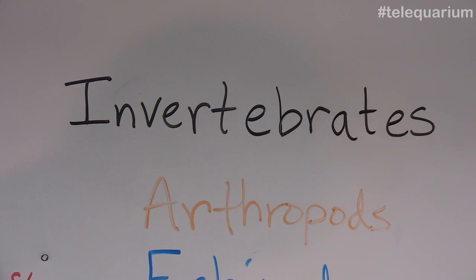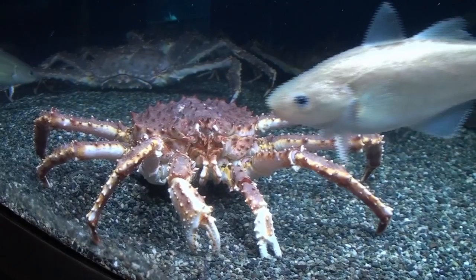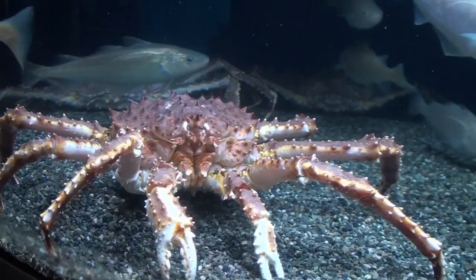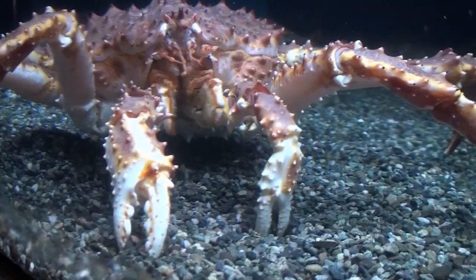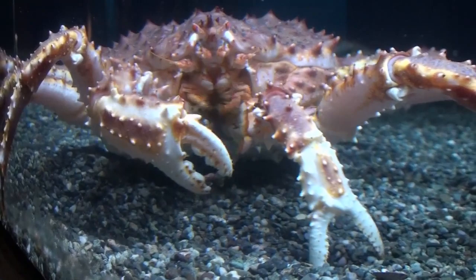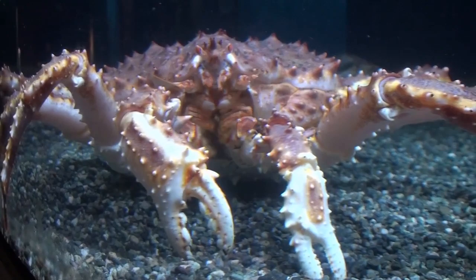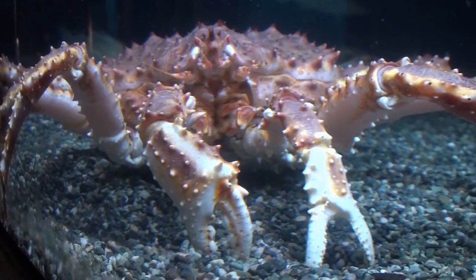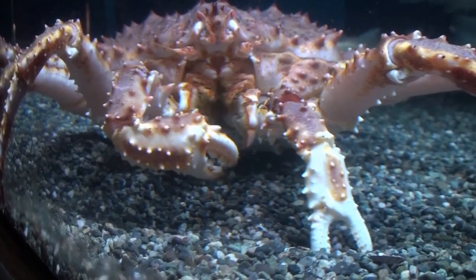Each of these groups of invertebrates is going to have a specific type of symmetry. We're going to start with the arthropods, and these are going to include animals like crabs and shrimp. Here is a king crab — a red king crab — and the red king crab is the largest crab we have here at the Alaska Sea Life Center, not quite the largest crab in the world, but close. You can see it is sort of armored all over the outside of its body. The crab has what is called an exoskeleton, which you can think of like a hardened skin. That's what helps to protect its body. It also gives it structure, just like our skeleton, but theirs is on the outside.